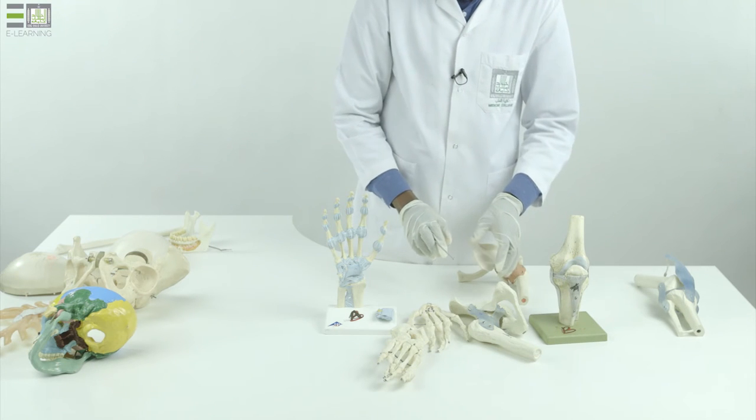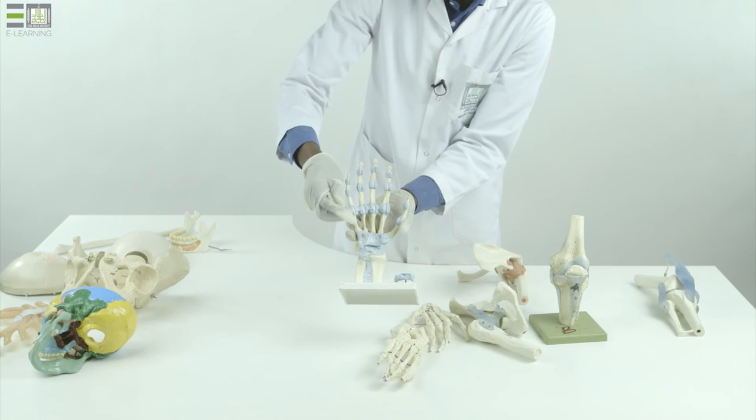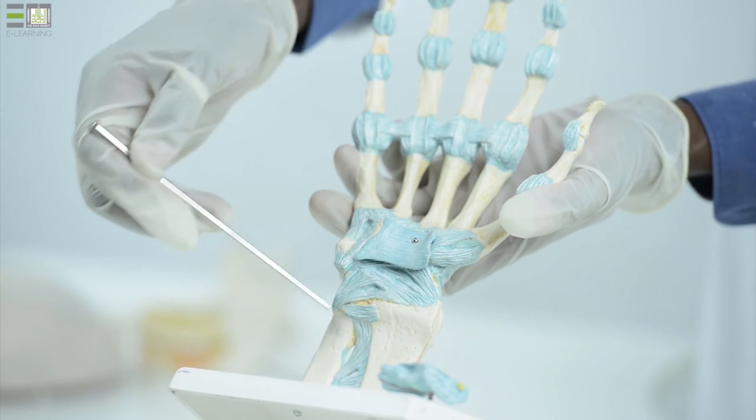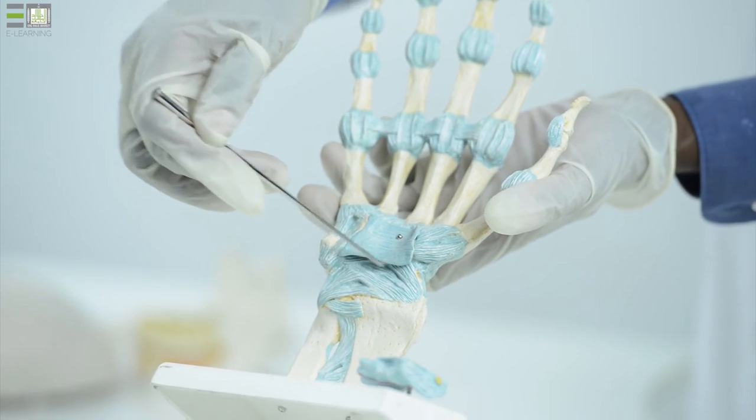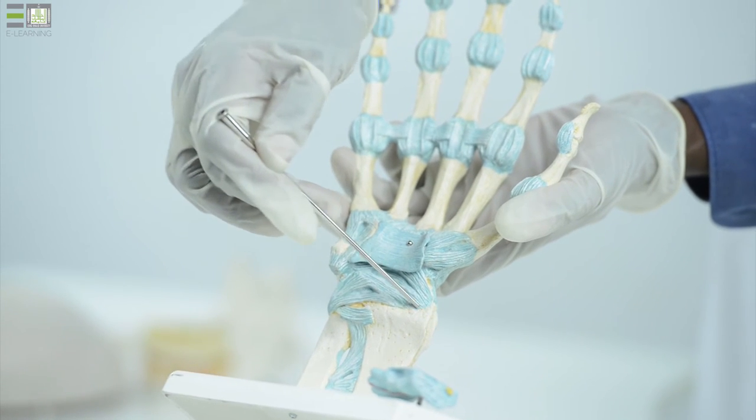The third type is ellipsoid, which is present between the distal parts of the bones of the forearm and the proximal row of the carpal bones. The fourth type is represented by our wrist joint.